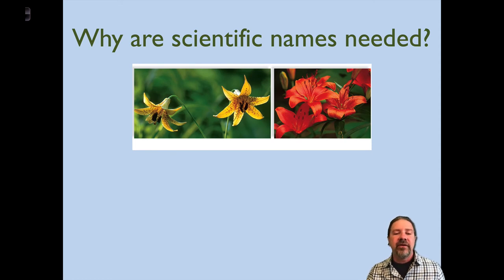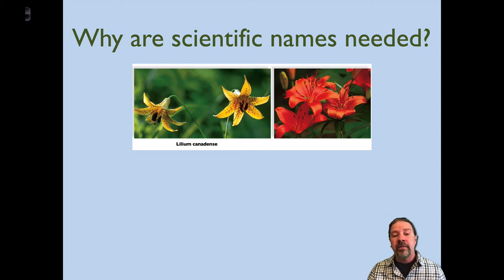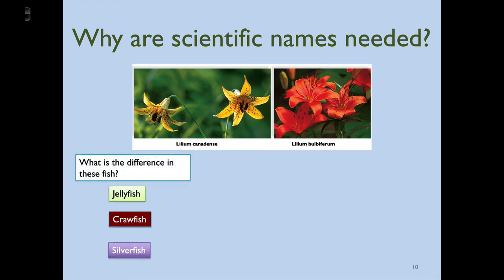Why do we need scientific names? Look at this picture — we have two clearly different-looking flowers, but the common name of both is simply 'lily.' The one on the left is Lilium canadense, the one on the right is Lilium bulbiferum, and we can easily differentiate the two by using a scientific name. Consider also jellyfish, crawfish, and silverfish — none of them are actually fish at all, but their common names suggest they are. And a crawfish, depending on where you're from, has different identities: crayfish, crawdad, freshwater lobster, even mud bug. It has multiple different identities all trying to refer to the same animal.